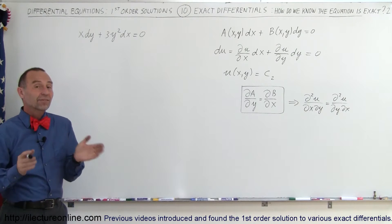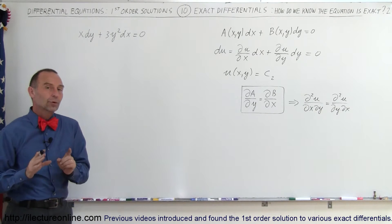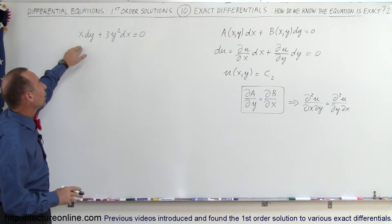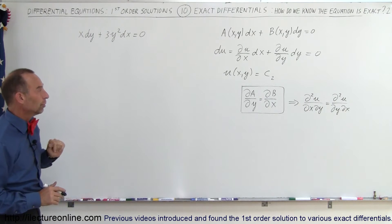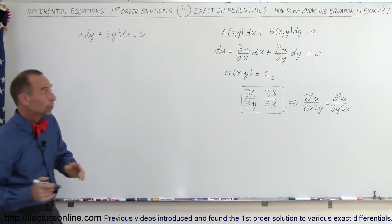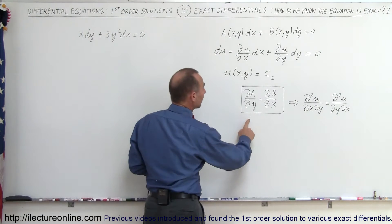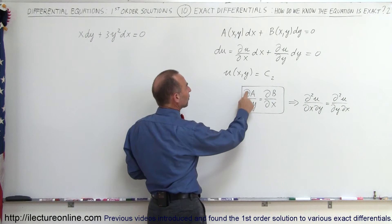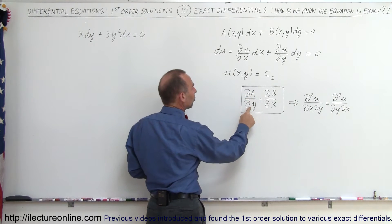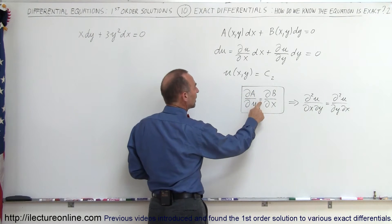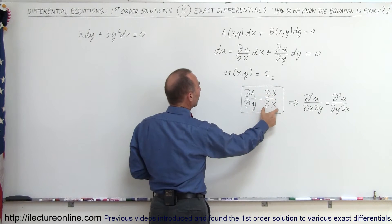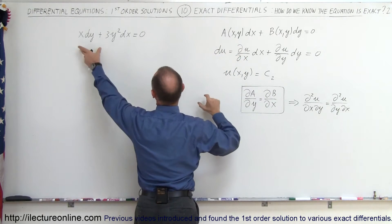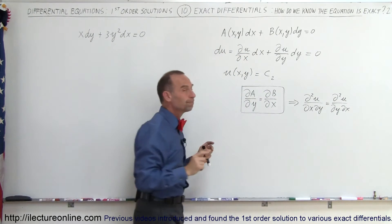Welcome to our lecture. In this example we're going to determine if this is an exact differential equation of the first order. The rule is that for it to be an exact differential equation of the first order, the partial derivative of A with respect to Y must be equal to the partial derivative of B with respect to X, A being the first part of the equation, B being the second part.